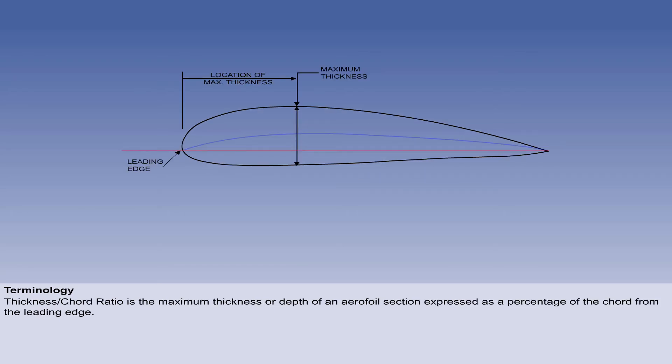Thickness-cord ratio is the maximum thickness or depth of an aerofoil section expressed as a percentage of the cord from the leading edge. The thickness and thickness distribution of an aerofoil section have a significant effect on its airflow characteristics.